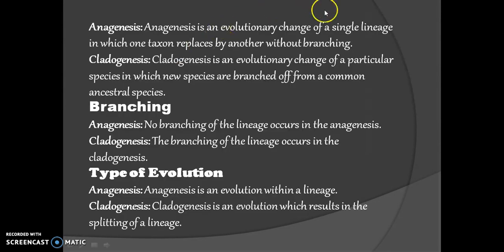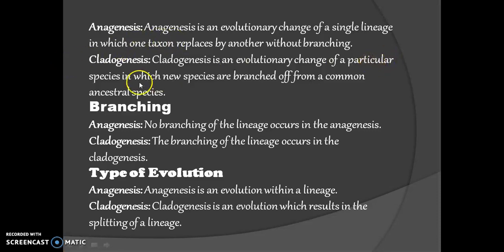Anagenesis is an evolutionary change of a single lineage in which one taxon replaces another without branching. Two key points: there is no branching, and one taxon replaces another, meaning no increment in species number. Cladogenesis is an evolutionary change in which new species branch out from a common ancestral species. In anagenesis the parental species becomes extinct, but in cladogenesis the parental species does not become extinct.